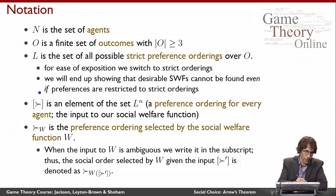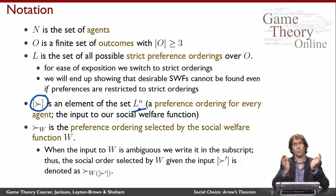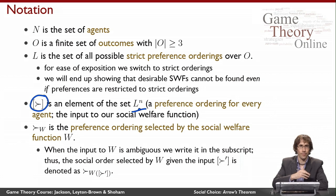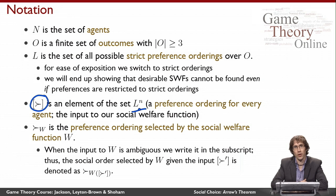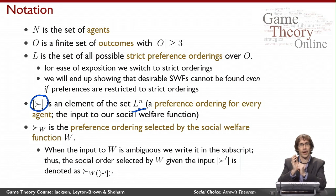I'm going to use this notation to denote an element of the set L to the n — in other words, a preference profile, a preference ordering for every agent. This is, of course, the input that our social welfare function takes. Recall that a social welfare function is a mapping from a preference profile — a set of preferences, one for every agent — to a single preference ordering, which is the social welfare ordering.